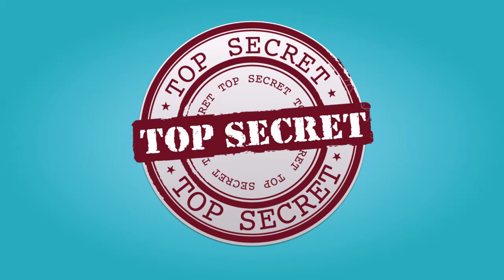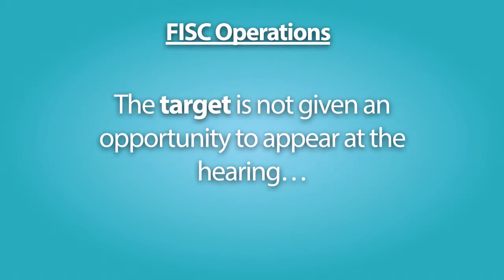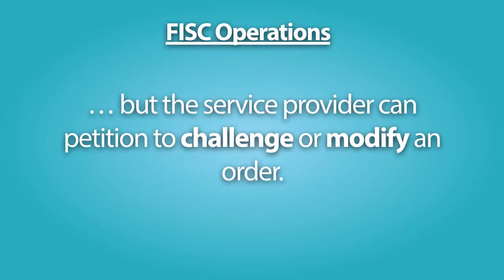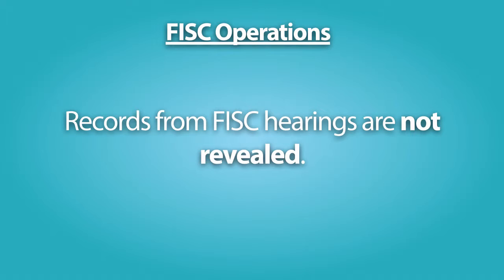The FISC's operations are largely kept secret due to the sensitive nature of the proceedings, and the court's ex parte process is primarily non-adversarial. The target of a requested surveillance order is normally not given an opportunity to even appear at the hearing or be informed of the presence of the order. However, the court rules of procedures do allow electronic service providers and business order recipients to petition to challenge or modify any order. Records from FISC hearings are not revealed even to petitioners challenging surveillance orders under the court rules.